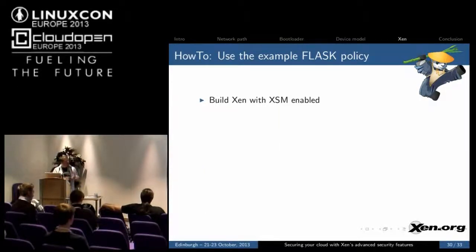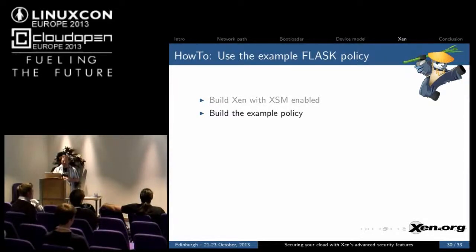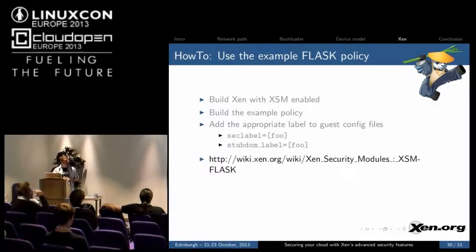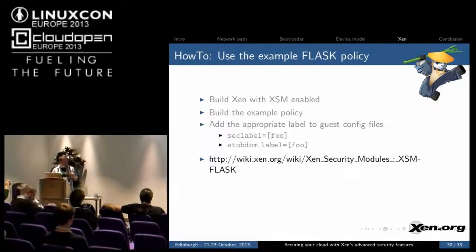To set up Flask, you build Xen with XSM enabled, compile the example policy, and then add the appropriate label to the guest config files: 'seclabel equals' and then the name of the label, or 'sstep-on label equals' and whatever the name of the label. There's a how-to on the wiki page with a lot more detail than I can cover in this talk.